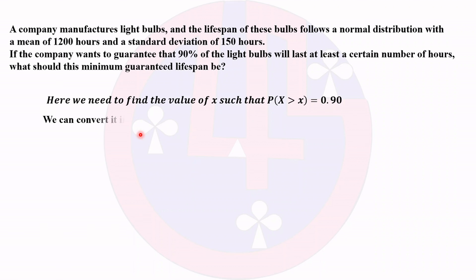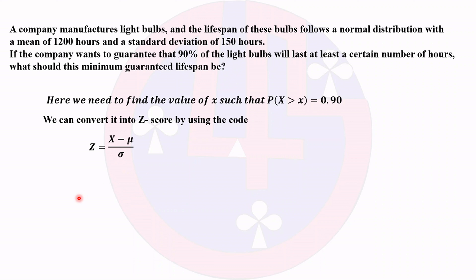First, we convert to a Z-score using the standard normal distribution formula: Z = (X − μ) / σ. We know μ = 1200 and σ = 150 hours. Substituting, Z = (X − 1200) / 150.